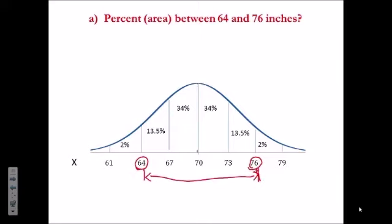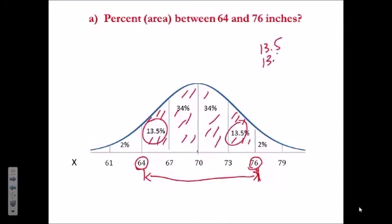We know that these are the percents under the curve. So, therefore, to find the percent in the interval from 64 to 76, we would just add these numbers: 13.5, another 13.5, 34, and 34.